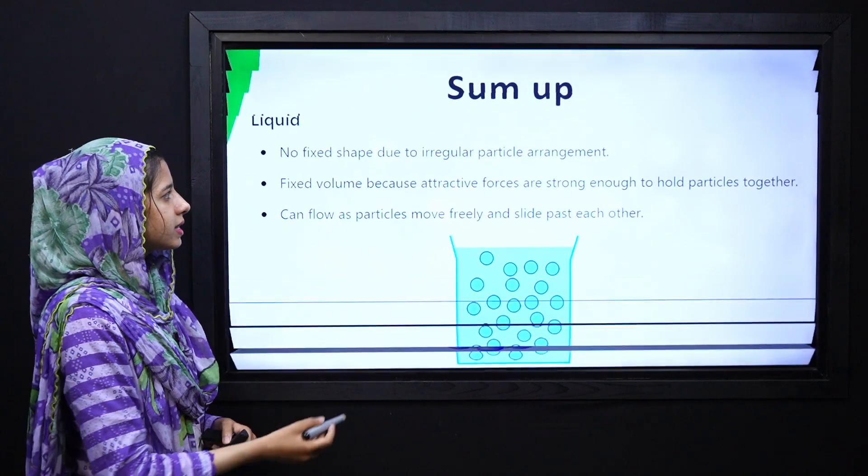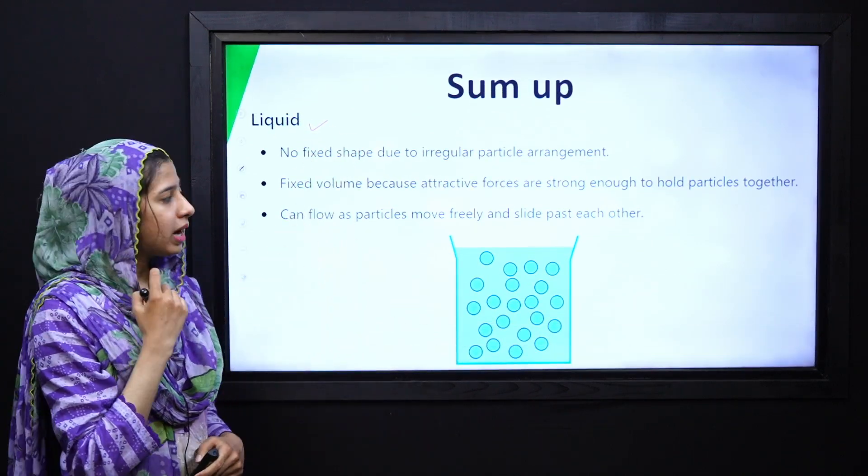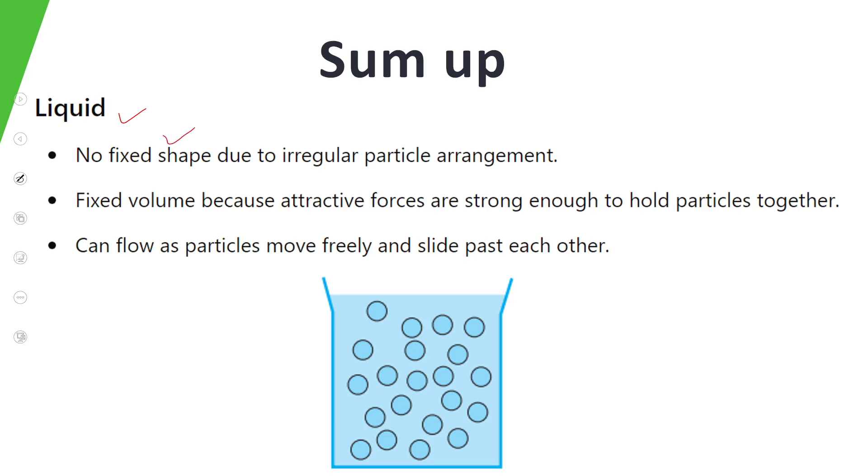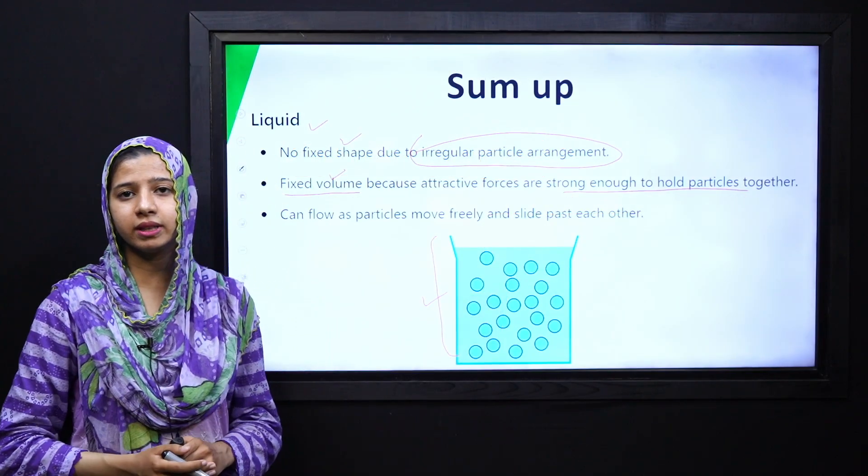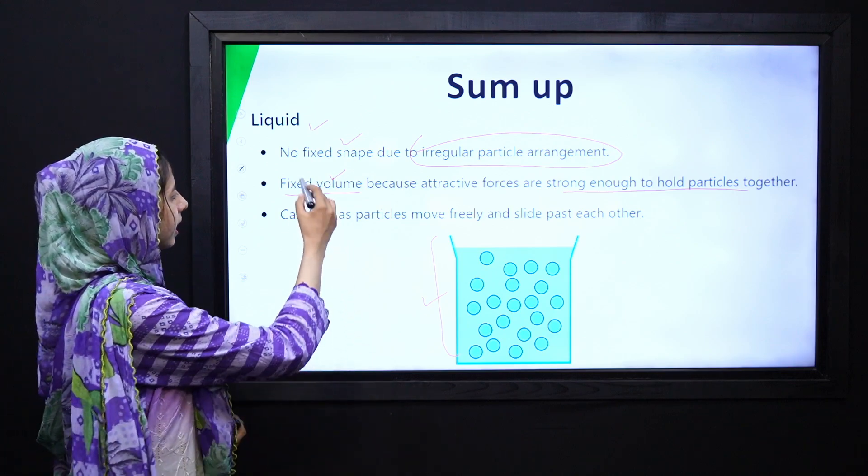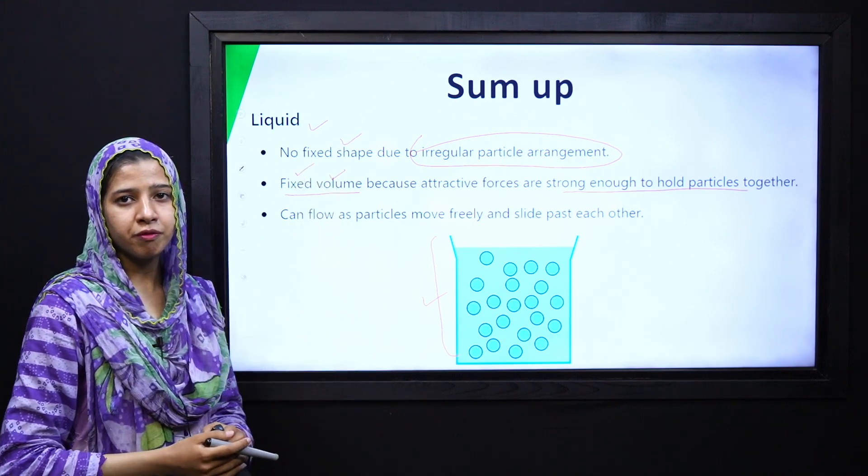Next, we discussed liquids. And we saw that we have no definite shape. They have irregular arrangement because of random motion. However, they have fixed volume because attractive forces are strong enough to hold the particles. And this is the reason that liquids have definite fixed volume.